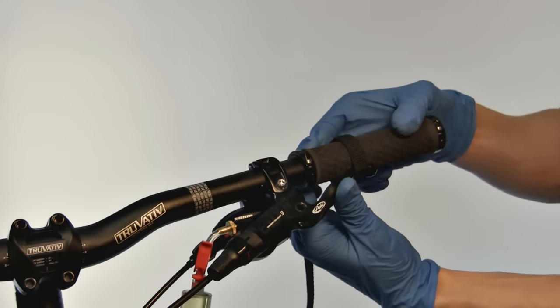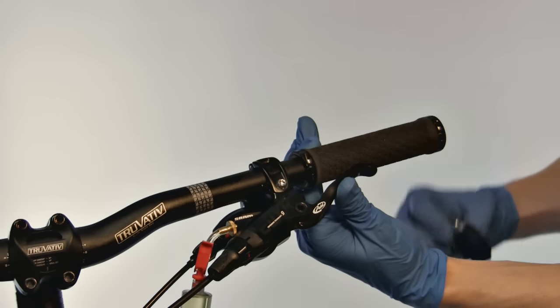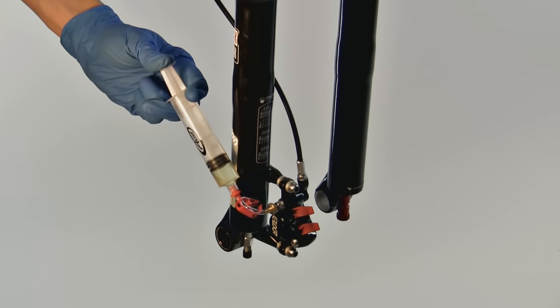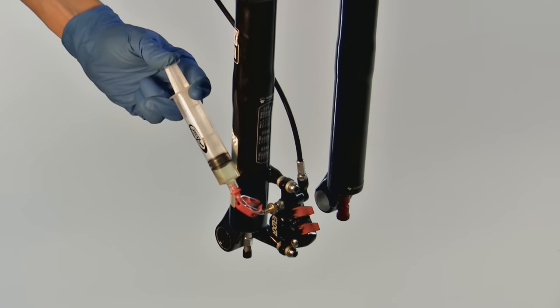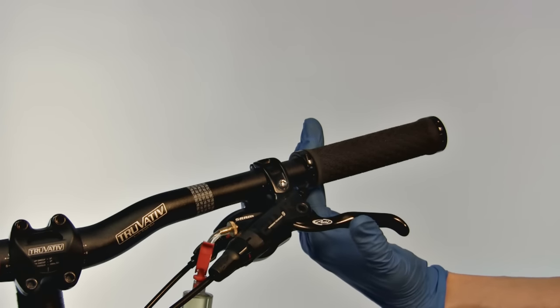Once the large bubbles at the caliper have stopped, remove the toe strap or rubber bands from the brake lever. But keep the lever pulled in with your finger. While keeping pressure on the brake lever, apply pressure on the syringe plunger and allow the brake lever to slowly release to the fully extended position.